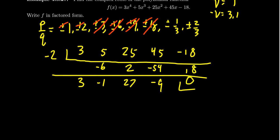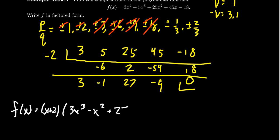Let's look at the factorization we've now found. f(x) can be written as (x + 2) times (3x³ − x² + 27x − 9), since −2 is a root. Now for the rational roots of this cubic factor, the candidates would be ±1, ±3, ±9, ±1/3. However, we already know 1, 3, and 9 don't work, and negative 3 and negative 9 don't work either.